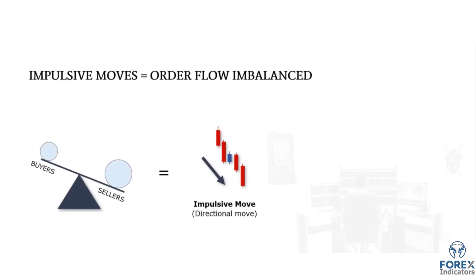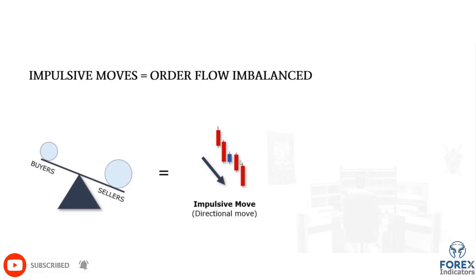Looking at a bearish impulsive move: most candles are one color, they close towards the lows, and they're big candles — suggesting a strong and directional impulsive move. In terms of order flow, this means the sellers are in control; there are more sellers than buyers.